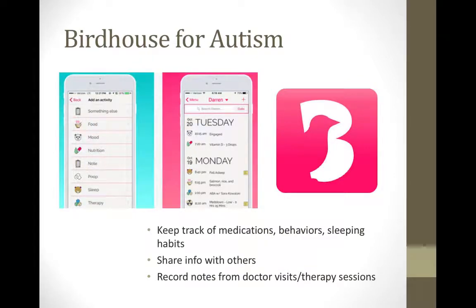The next application is called Birdhouse for Autism. The goal of this application is to keep everything about ongoing care in one simple timeline. With Birdhouse, you can keep a daily behavioral journal, activate reminders throughout the day, track new diets, identify what could be causing certain behaviors, record notes from therapy sessions, and much more. This is a different alternative to the My Autism Day app from earlier.